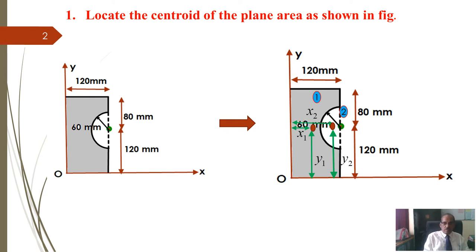Locate the centroid of the plane area as shown in figure. What we have done, this is a rectangle you will find and this part is removed, this part is semi-circle, half circle is deducted and for rest of the figure, this rest of the area we want to calculate the centroid. Coordinate system is given and if not given you assume as per your convenience this is x coordinate and this is y coordinate.